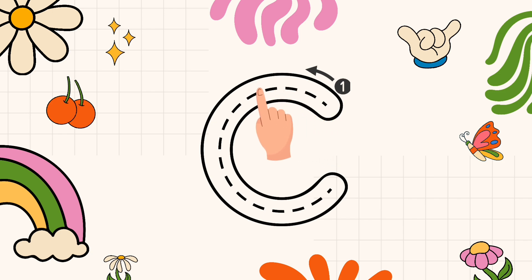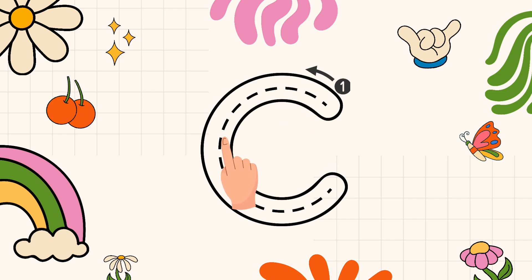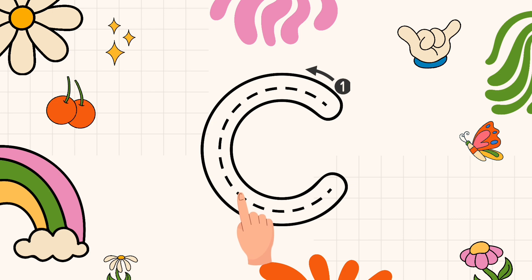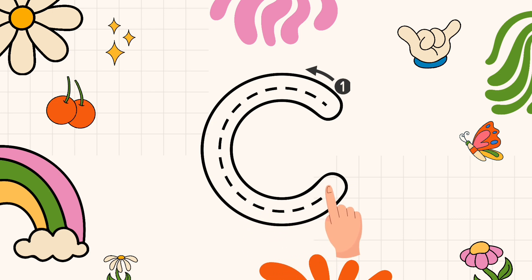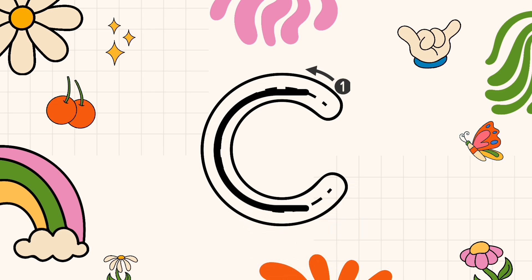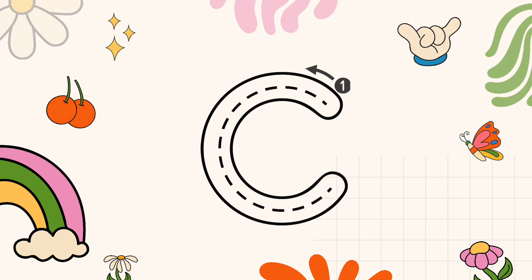We start from top and make one curve till the bottom. So a small curve is alphabet C. Now what are the words from C?